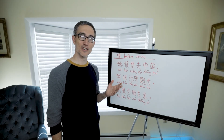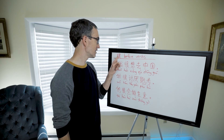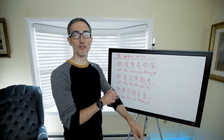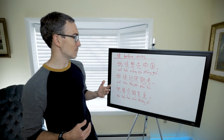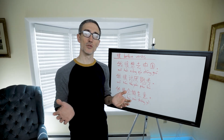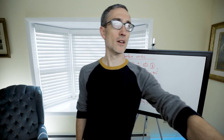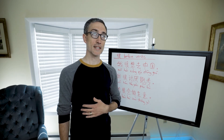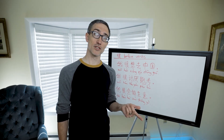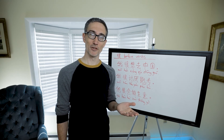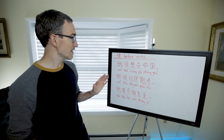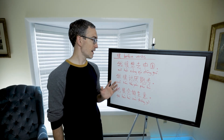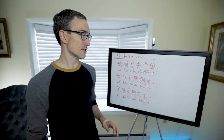Here I want to talk about a simple but important point: 'hěn' (very) can come before some verbs. This is important because in English we don't do this. To intensify a verb in English we don't say 'I very love you' — we might say 'I really love you' or 'I love you very much.' But in Chinese, 'hěn' can come before psychological verbs and some auxiliary verbs.